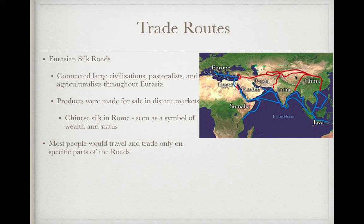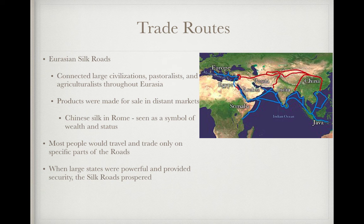Rather, it was like a relay system where they would trade their goods to the next person in line to travel the next distance on the road. And when large states were powerful and provided security, the Silk Roads prospered. We see this under the Han Dynasty and in the 7th and 8th centuries in particular, which we'll talk about in the next period.